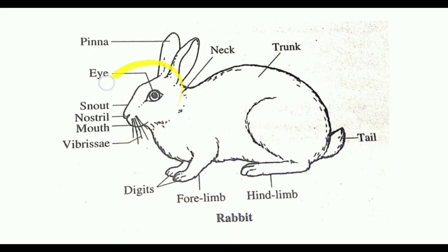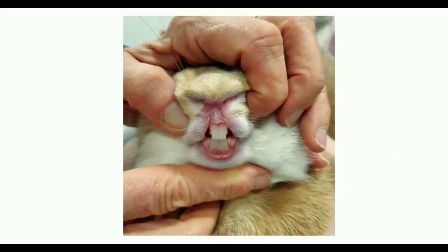Their head is slightly depressed and elongated and they have a blunt snout. At the anterior end of the snout, there is a mouth and the mouth has upper and lower lips. Their upper lip is divided by a cleft and this cleft exposes their incisors. Such a divided upper lip is called a hare lip or cleft lip.